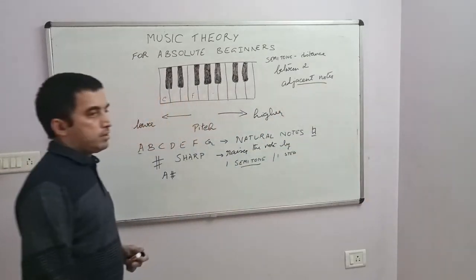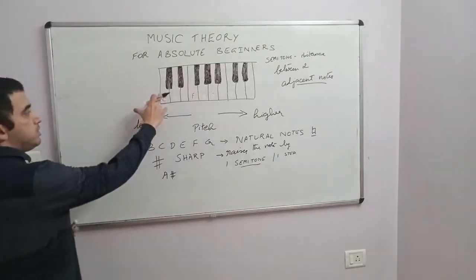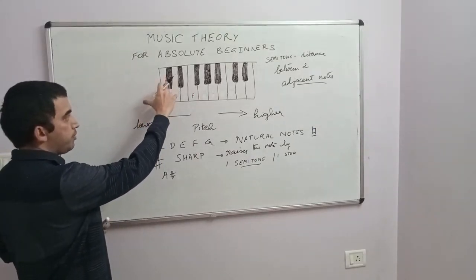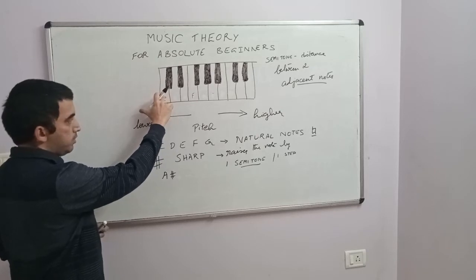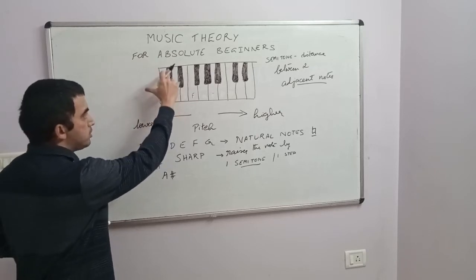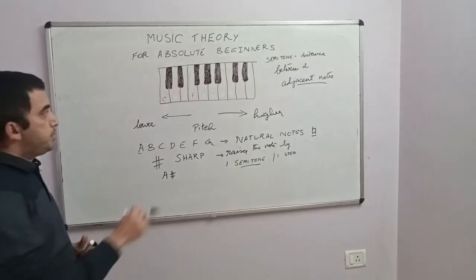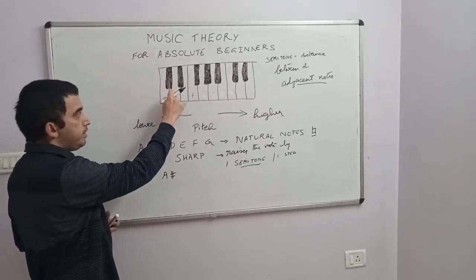This C white key and this black key become adjacent, not C and D, because the black key comes in between the two white keys. Similarly, the black key and the D note are adjacent.